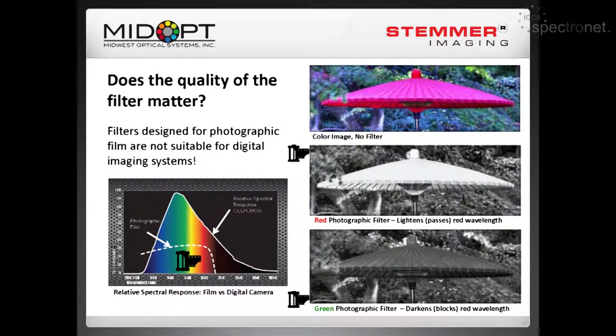The quality of filters definitely matters. Filters have been around for over 100 years, first used in the photographic industry to bring out contrast in black and white film. Same concept — with the red umbrella, if we want to highlight it, we use a red filter; if we want to darken it, we use a green filter. With the rise of machine vision and digital cameras, engineers adopted this concept, figuring if it works for black and white film, it can work in the machine vision world.